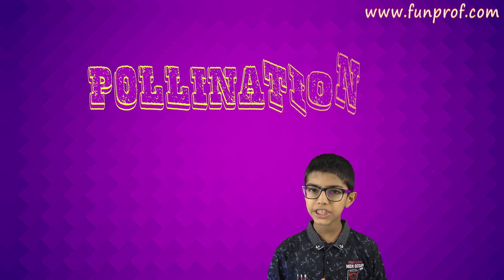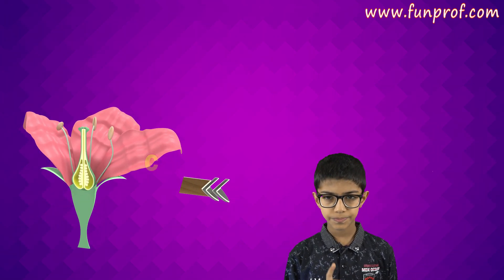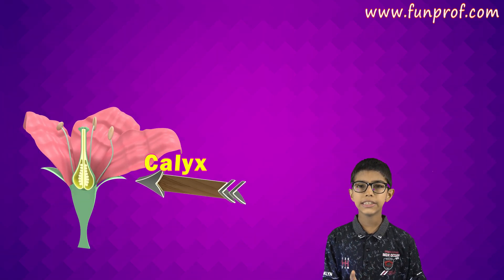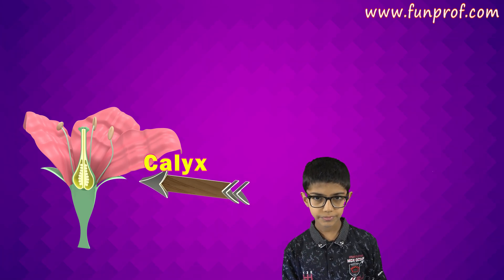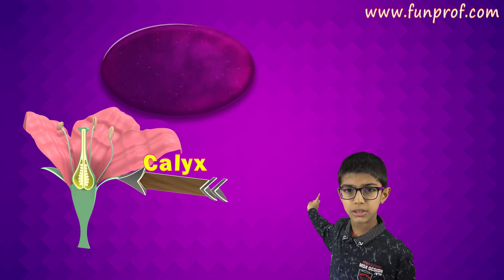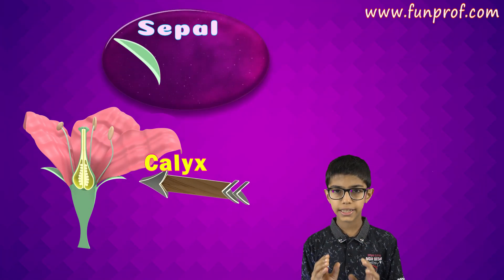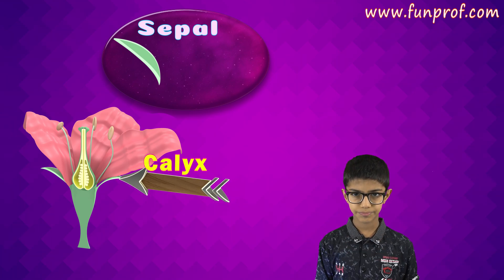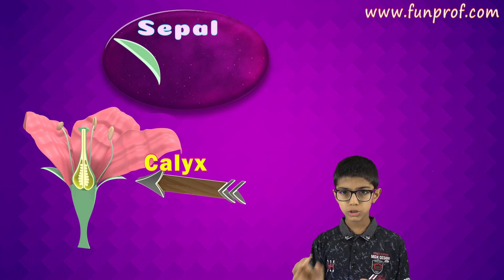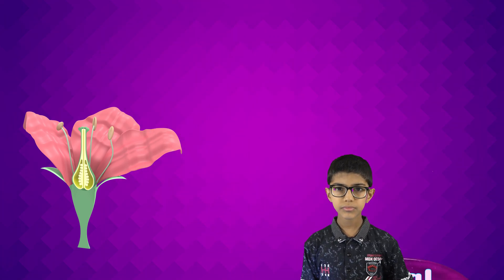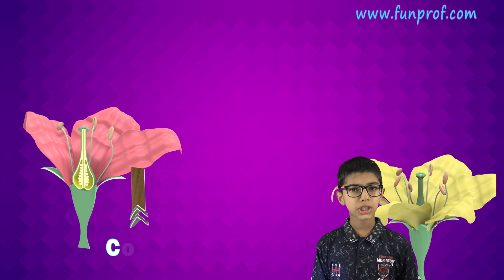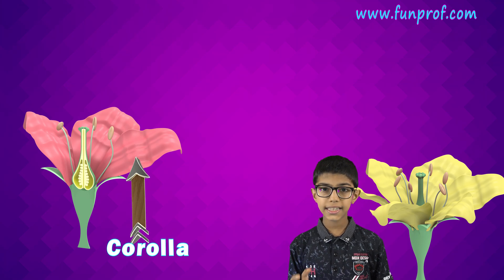Hello friends, today we will learn about pollination. First we have to learn the four main parts of a flower. First is the calyx — it's the outermost wall of a flower. It protects the flower and has four to five sepals. The sepals protect it in the bud stage so it doesn't break.